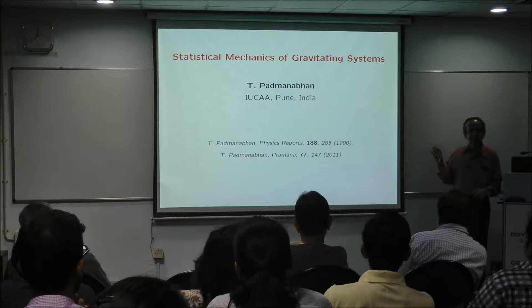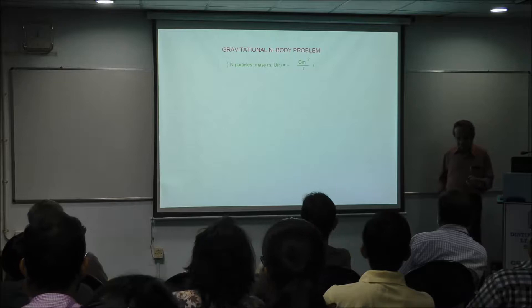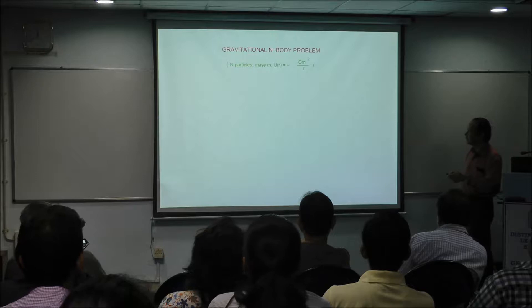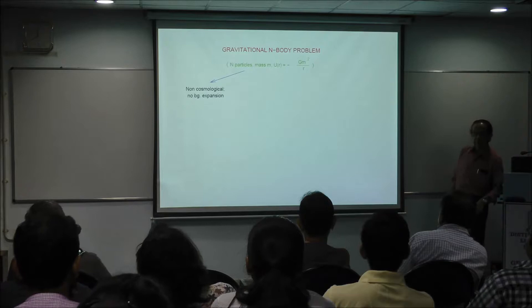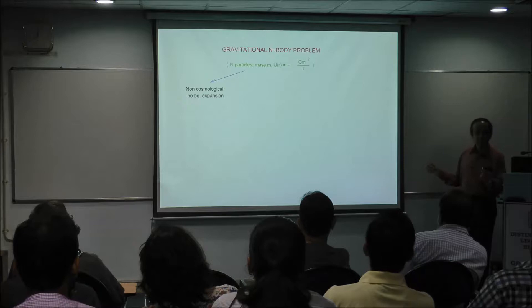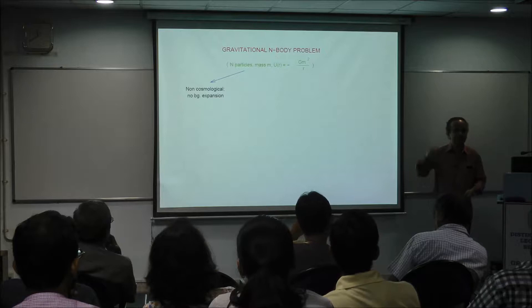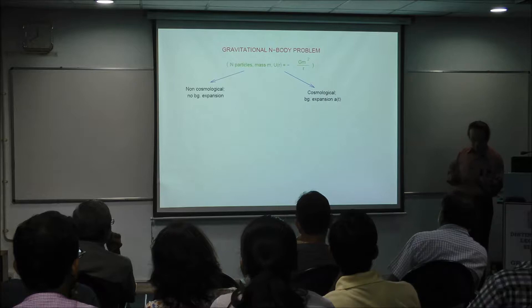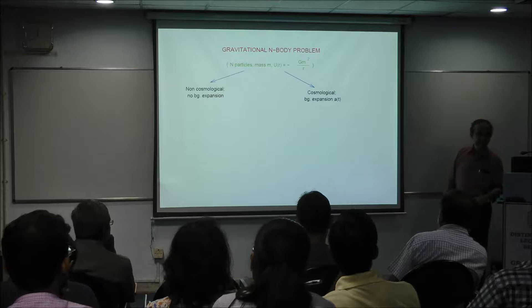If time permits, I will mention that aspect. So just to give you an overview: what we are talking about here is a gravitational N-body problem, where there is a large number of particles N with mass m and a potential of interaction which is just the gravitational interaction. You can do this in two different contexts. First is non-cosmological, where the background is not expanding — that is what you would normally think of, like a star cluster, and you don't worry about universe expansion. But it turns out that cosmological expansion also has some very interesting physics associated with it.